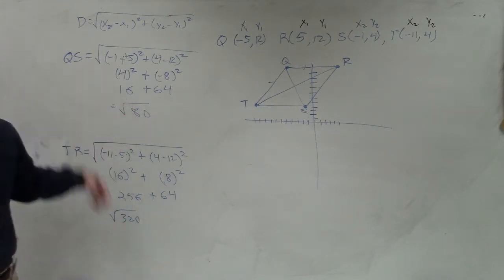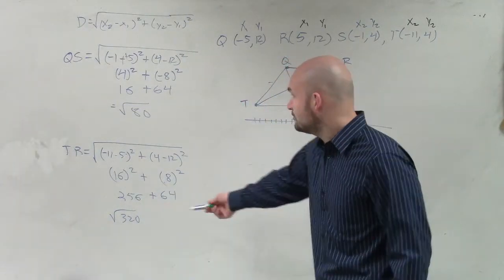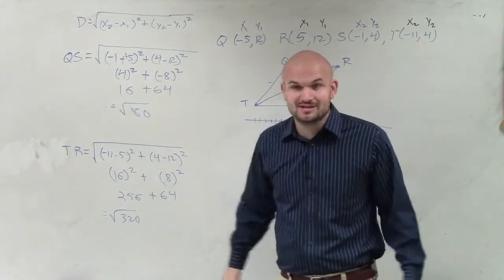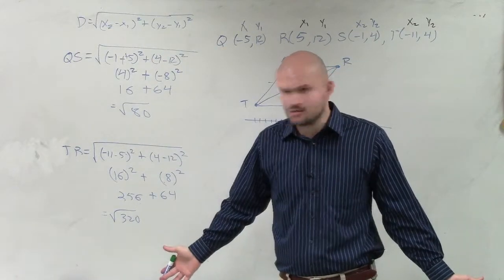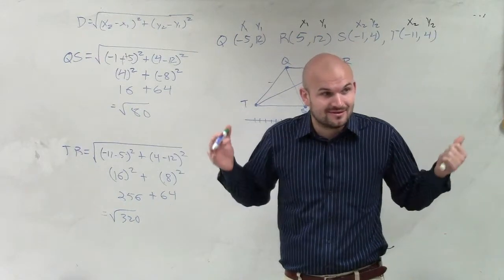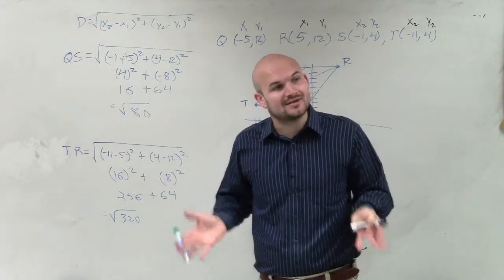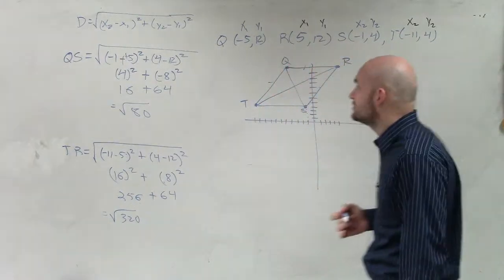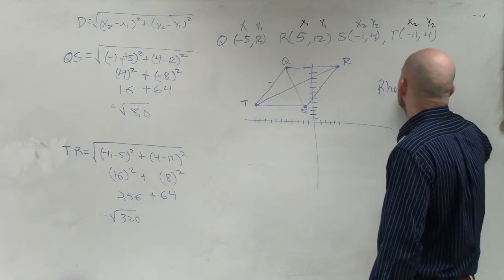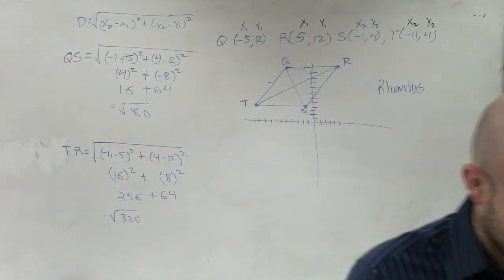So ladies and gentlemen, are the diagonals equal to each other, huh? Are the diagonals equal in measurement? One is the square root of 320, one is the square root of 80. Is those equal? No, they're not equal. So if they're not equal, then it has to be a? Rhombus. Rhombus, right? Because a rhombus is the only one where the diagonals are not going to equal measure, or your diagonals are not going to be equal. So therefore, ladies and gentlemen, this is a rhombus, okay? And that's it.